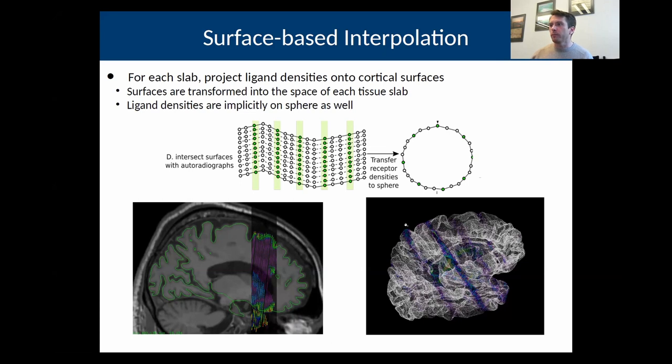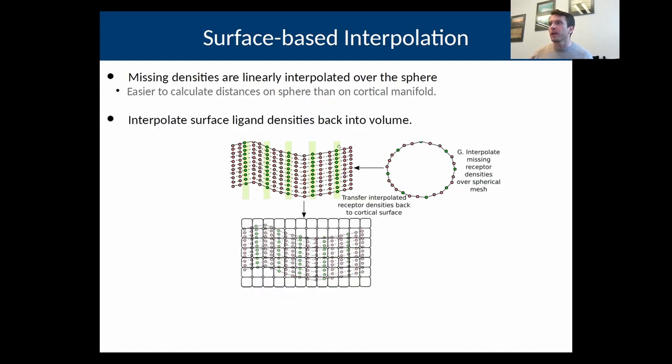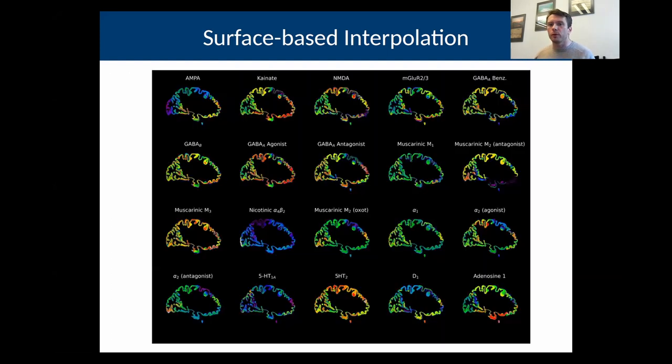So basically what you end up with is meshes with... oh sorry, that's actually here. Yeah, so when you do the interpolation, the red dots are the vertices that have been filled in. You interpolate over the sphere, and then you can put it back onto your surfaces, and then interpolate back into a volume.